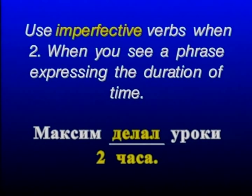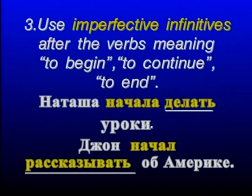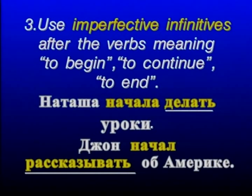And there is one more rule that guides us towards imperfective verbs. Use imperfective infinitives after the verbs meaning to begin, to continue, to end. At this point we only know the verb начинать/начать. Natasha начала делать уроки — Natasha started doing her homework. Начала делать: after the verb начать you have to use an imperfective infinitive. Джон начал рассказывать об Америке.